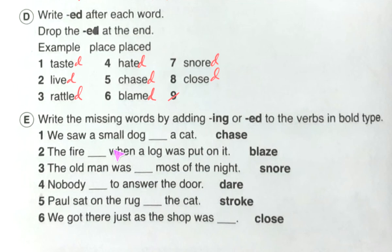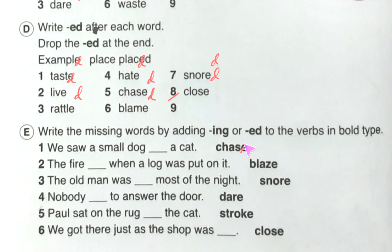First sentence: we saw a small dog dash — a cat chase. What we see is that at that time the dog was chasing a cat. So we drop the e and add ing: chasing.